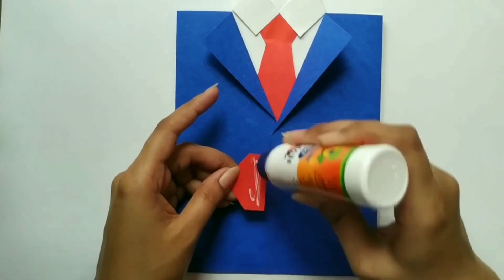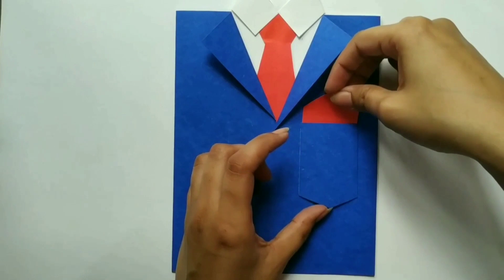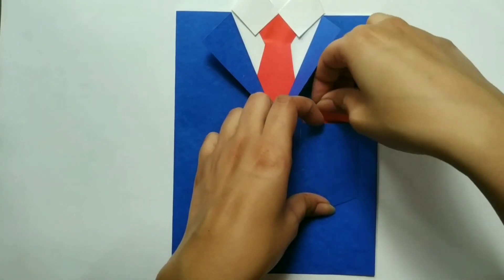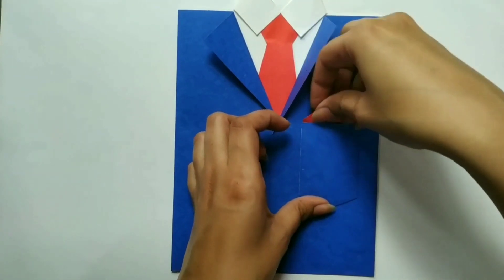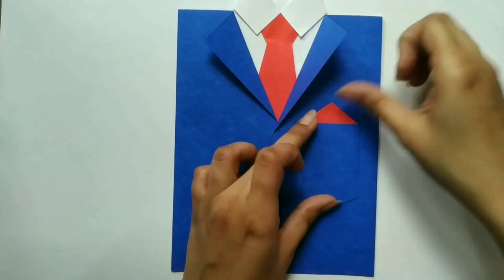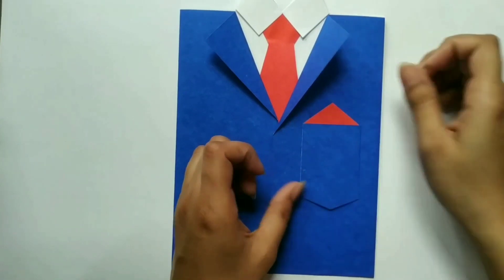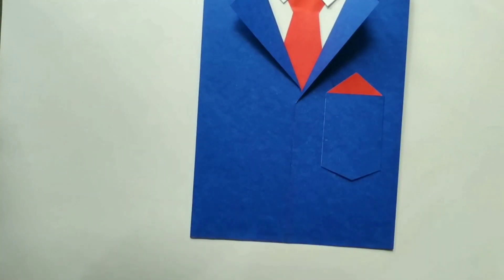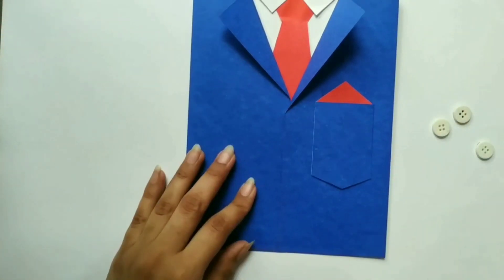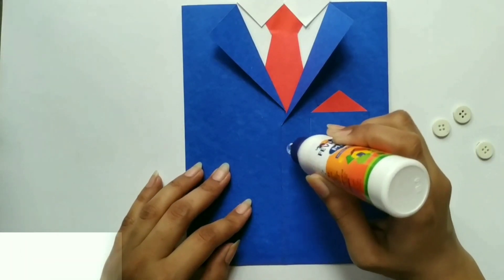Also paste a pocket square as shown. Also paste some buttons on the blazer.